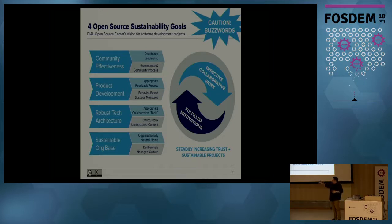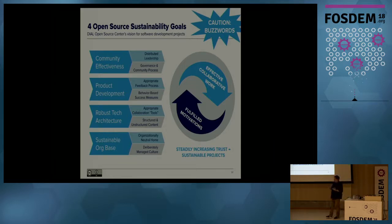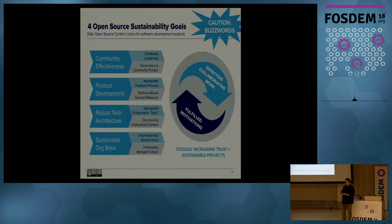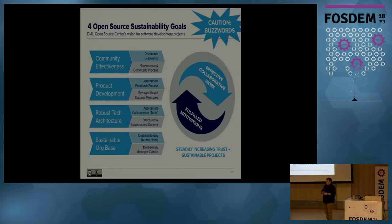To reach this happy place where contributors are growing and the project is thriving, we came up with four key areas. One of the most important is a need for a sustainable organizational home for a project — a neutral place where multiple organizations and individuals can come together, feel supported in their collaboration, and know their voice won't get drowned out. You have to deliberately manage that culture, with processes and standards in place for people to collaborate on a regular basis.